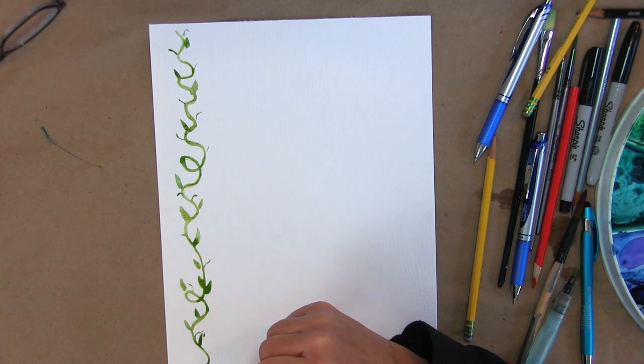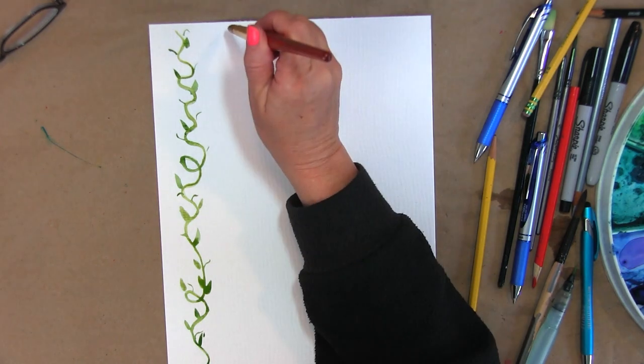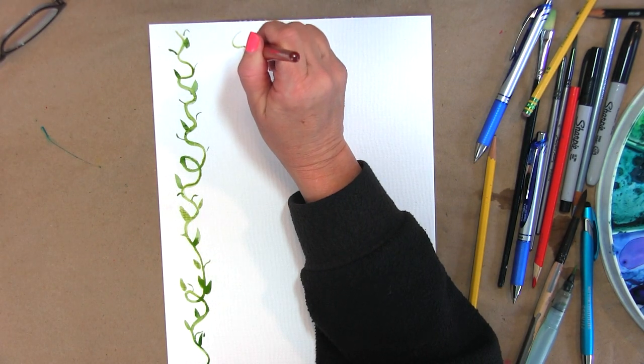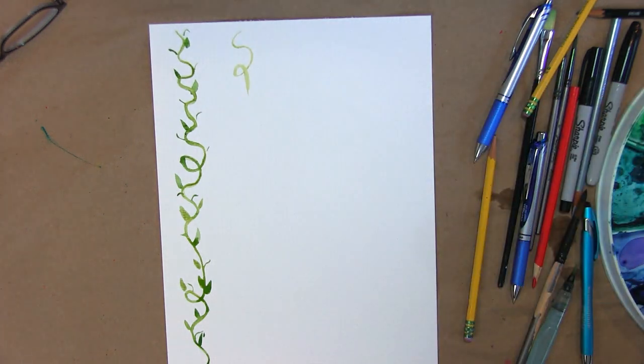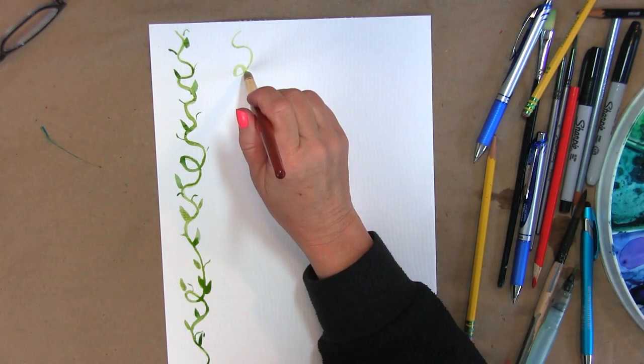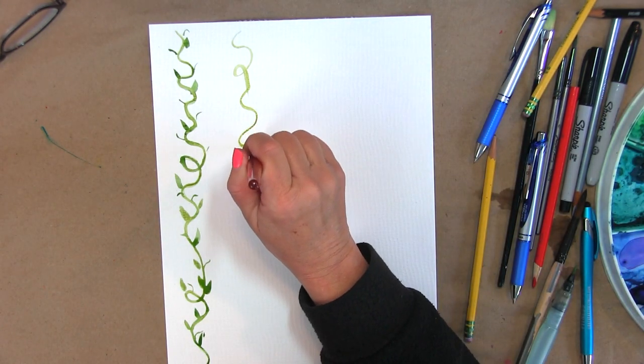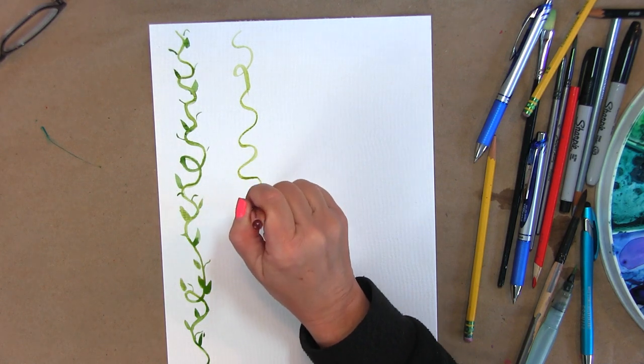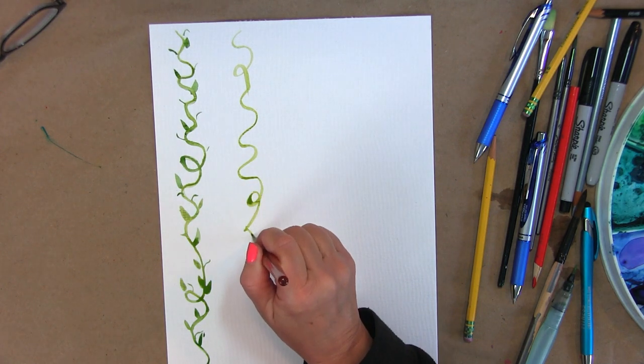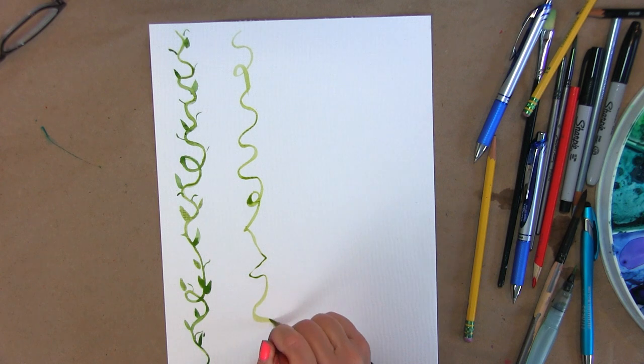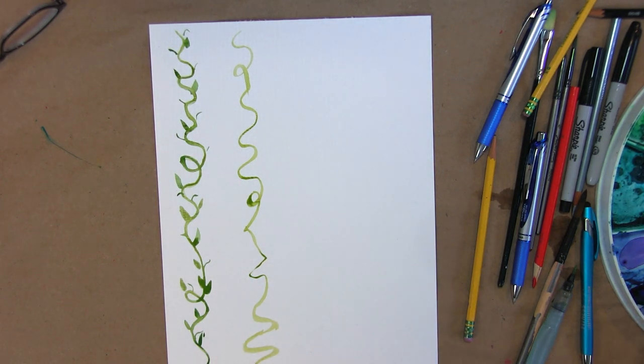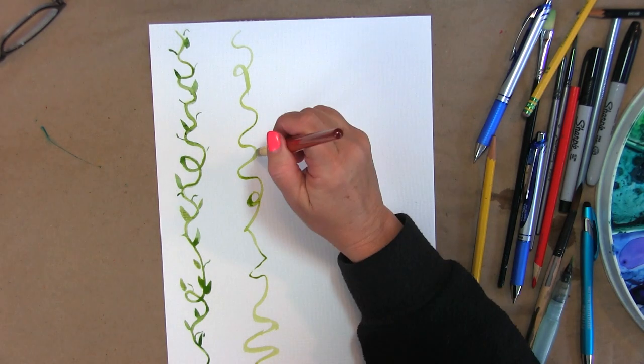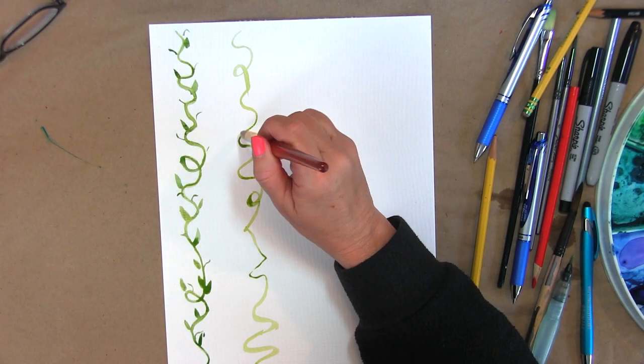They've never picked up a pencil before, they've never picked up a paintbrush before. A pencil is easier to control much more than a paintbrush. So for someone to be able to just pick up a paintbrush and create the perfect line or flower or leaf, it doesn't work that way.